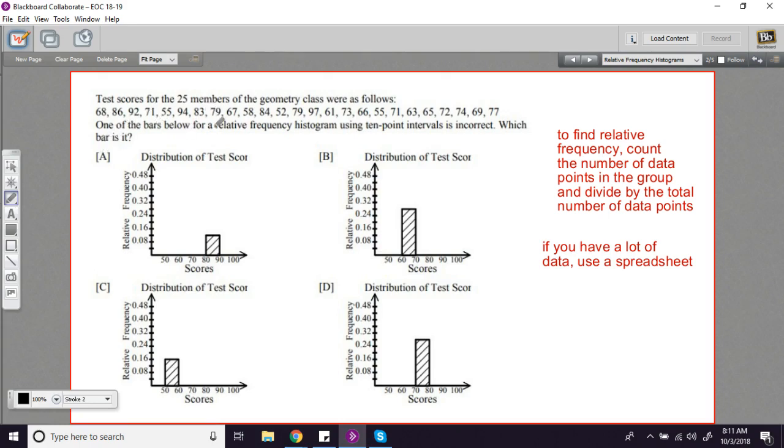You divide the data up into chunks, and the bars show how many pieces of data are in each chunk. For example, with this set of data, you've got numbers that range from the 50s up through the 90s. You might want to know how many numbers are in the 50s, how many in the 60s, how many in the 70s.